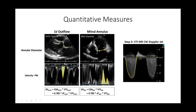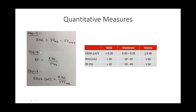The five measurements are: LVOT diameter and LVOT VTI to calculate LVOT stroke volume; mitral annulus width and mitral annulus VTI to calculate stroke volume through the mitral annulus; and the VTI of the mitral regurgitant jet. Step one: regurgitant volume equals stroke volume through the mitral annulus minus stroke volume through the LVOT. Step two: regurgitant fraction equals regurgitant volume divided by stroke volume through the mitral annulus. Step three: effective regurgitant orifice area (EROA) equals regurgitant volume divided by the MR VTI.